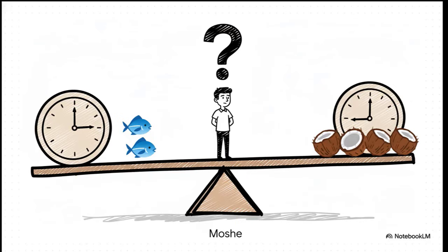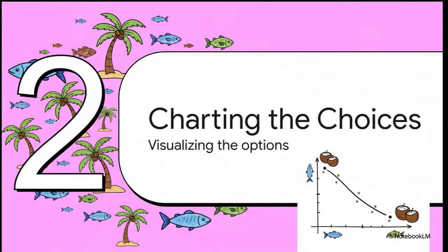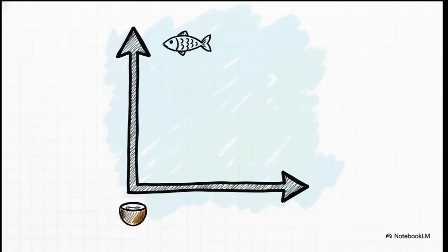Every hour he's out trying to catch fish is an hour he's not under the trees getting coconuts. You could try to juggle all these different combos in your head, but that gets complicated really fast. So let's do what economists do — let's draw a picture. A simple graph can help us map out every single possible outcome for Moshe's day. The vertical axis, going up and down, is for fish. The horizontal axis, going side to side, is for coconuts. And just like that, we have a canvas to lay out his entire world of possibilities.